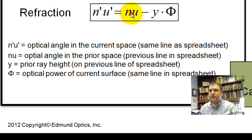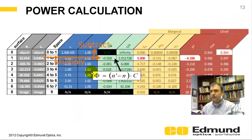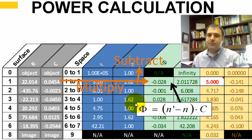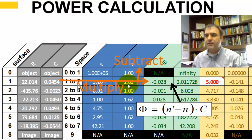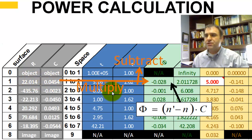The new optical angle is the old optical angle minus the negative power times the prior ray height. These are snapshots from the downloadable spreadsheet. The first one shows calculating power — really negative power — on surface one. You take your current index, 1.62, minus one, times the curvature. The curvature is just one over the radius; the spreadsheet takes care of all that. So: power equals delta index times curvature.